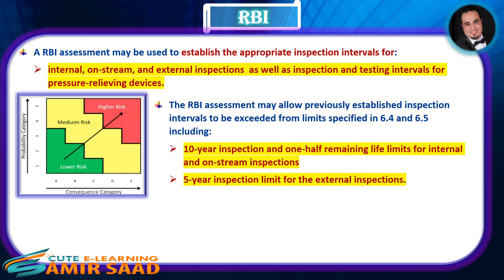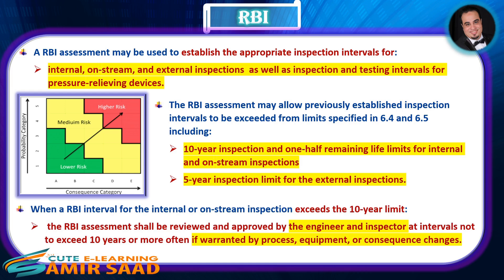The RBI assessment may allow previously established inspection intervals to be exceeded from the limits specified in 6.4 and 6.5, including the 10-year inspection and 1.5 remaining life limits for internal and on-stream inspections, and the 5-year inspection limit for external inspections. When an RBI interval for the internal or on-stream inspection exceeds the 10-year limit, the RBI assessment shall be reviewed and approved by the engineer and inspector at intervals not to exceed 10 years, or more often if warranted by process, equipment, or consequence changes.